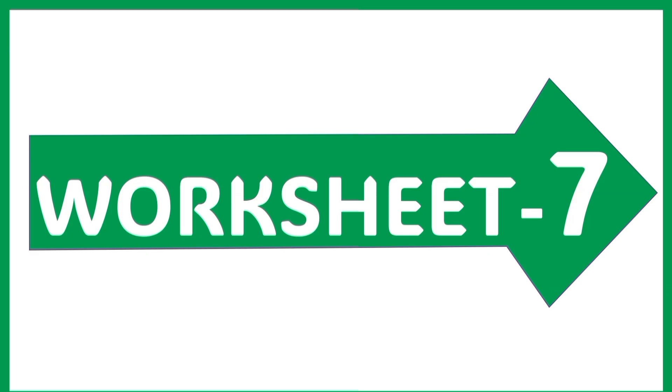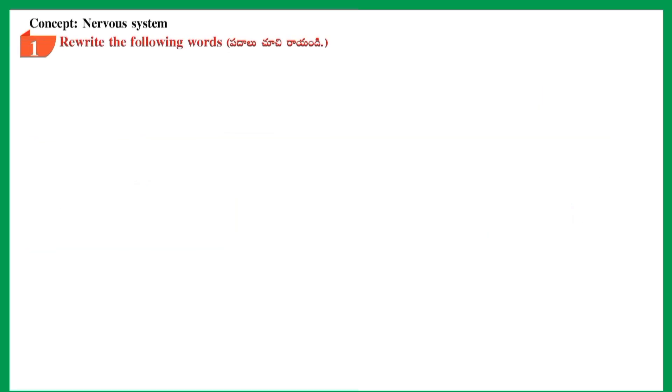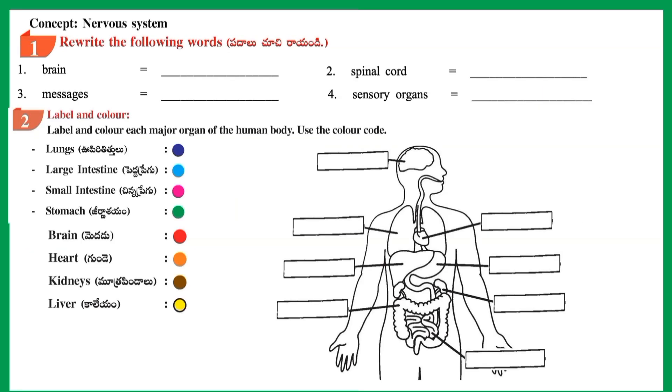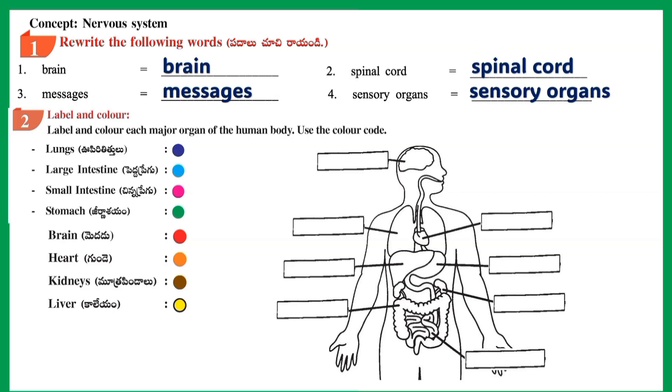Section 1: Rewrite the following words: Brain, Spinal Cord, Messages, Sensory Organs.